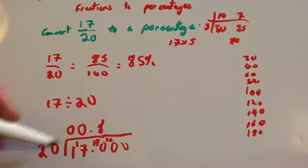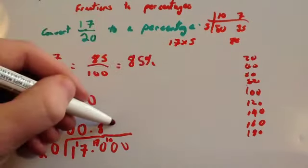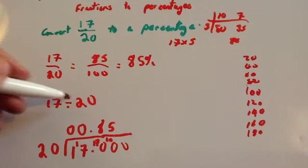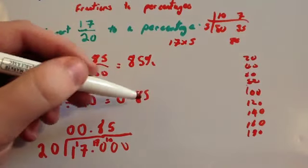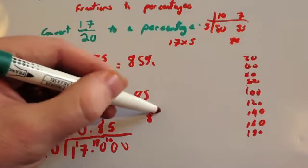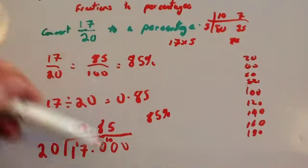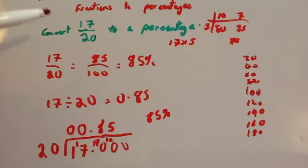And 20 into 100 goes 5 times. So whenever you do 17 divided by 20, you get 0.85. And then the percentage times by 100 and you get your 85%. So both methods work. This one's probably a bit simpler for this one, but this one will come in handy later and you'll see another example to show you that.